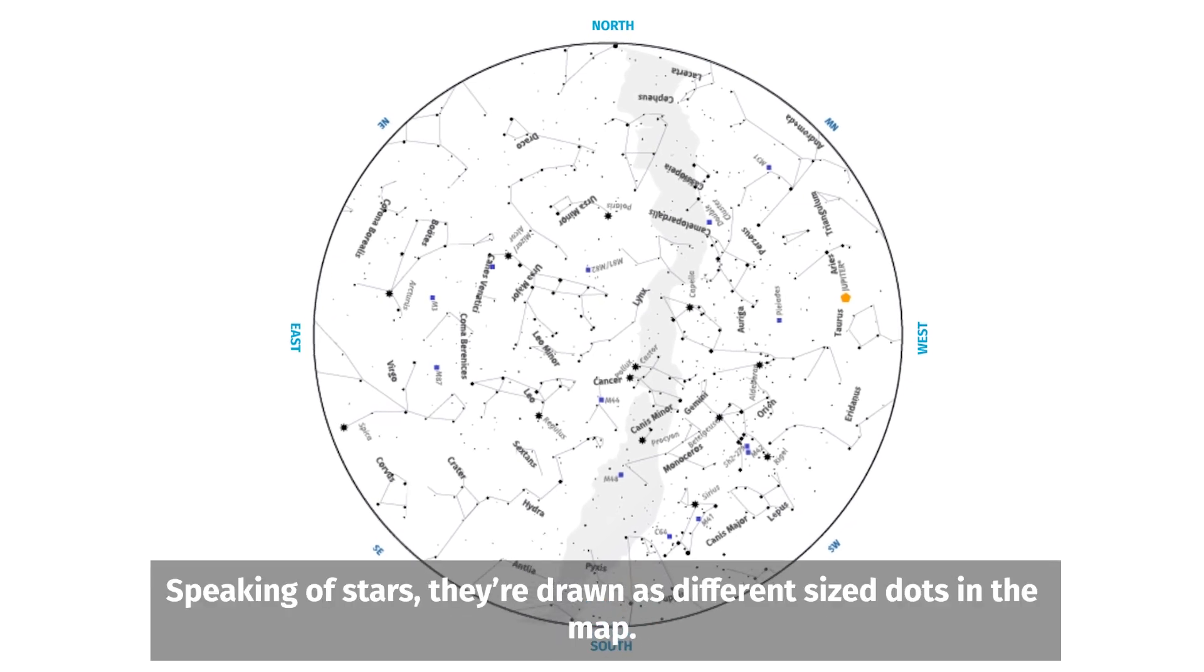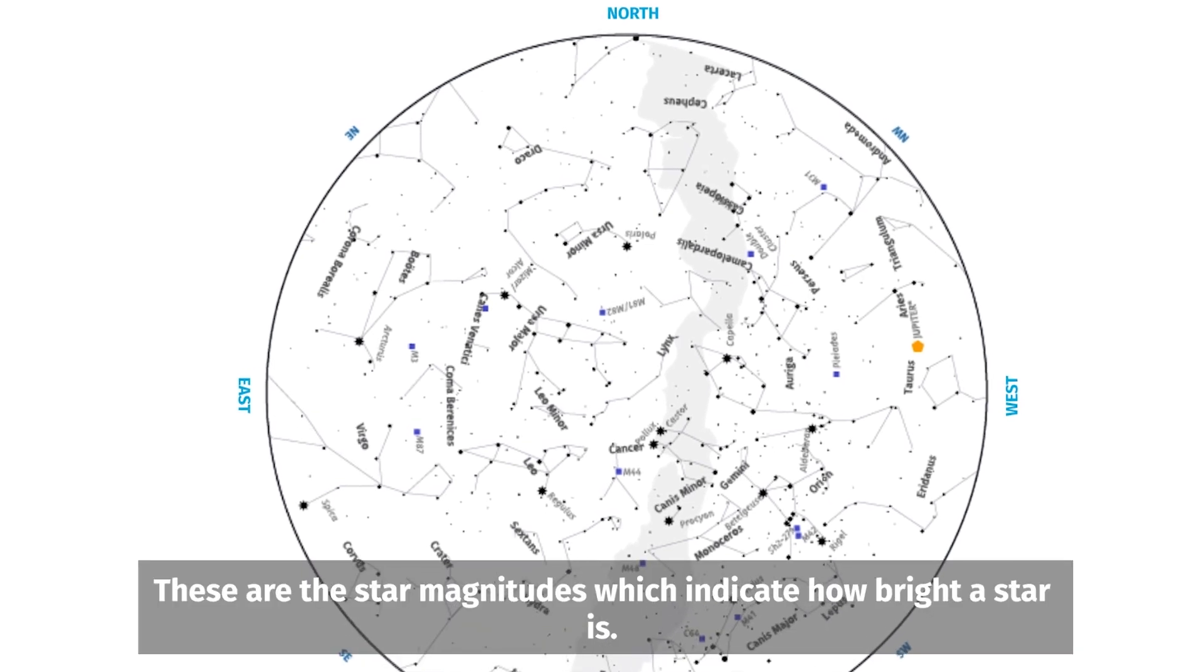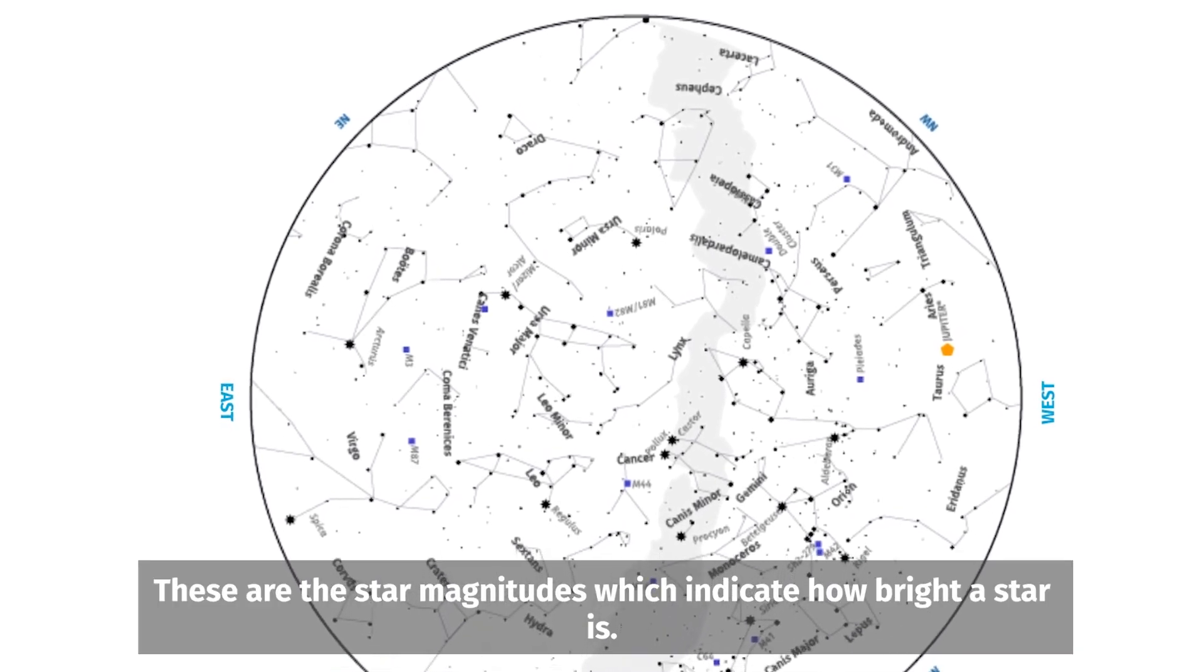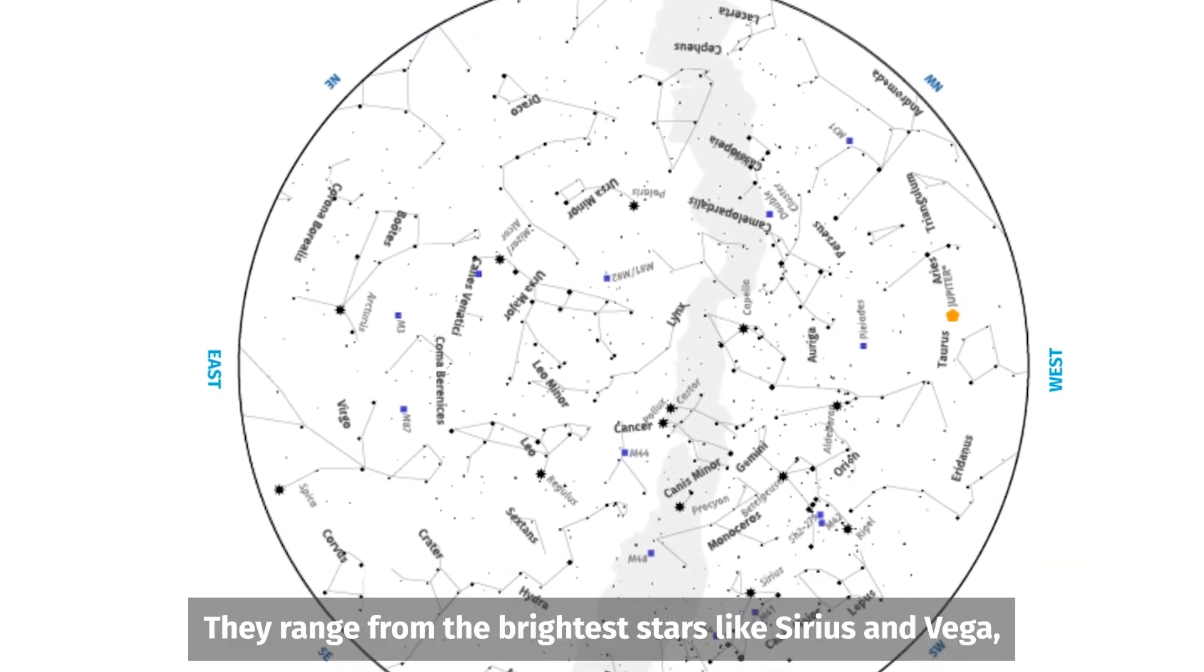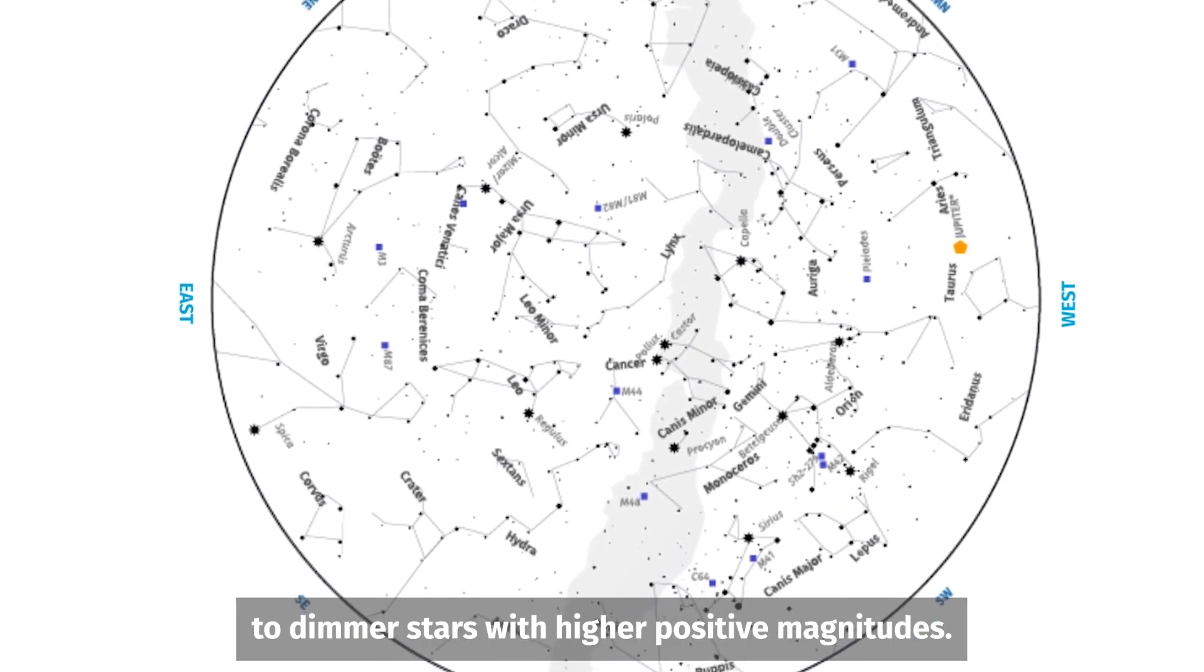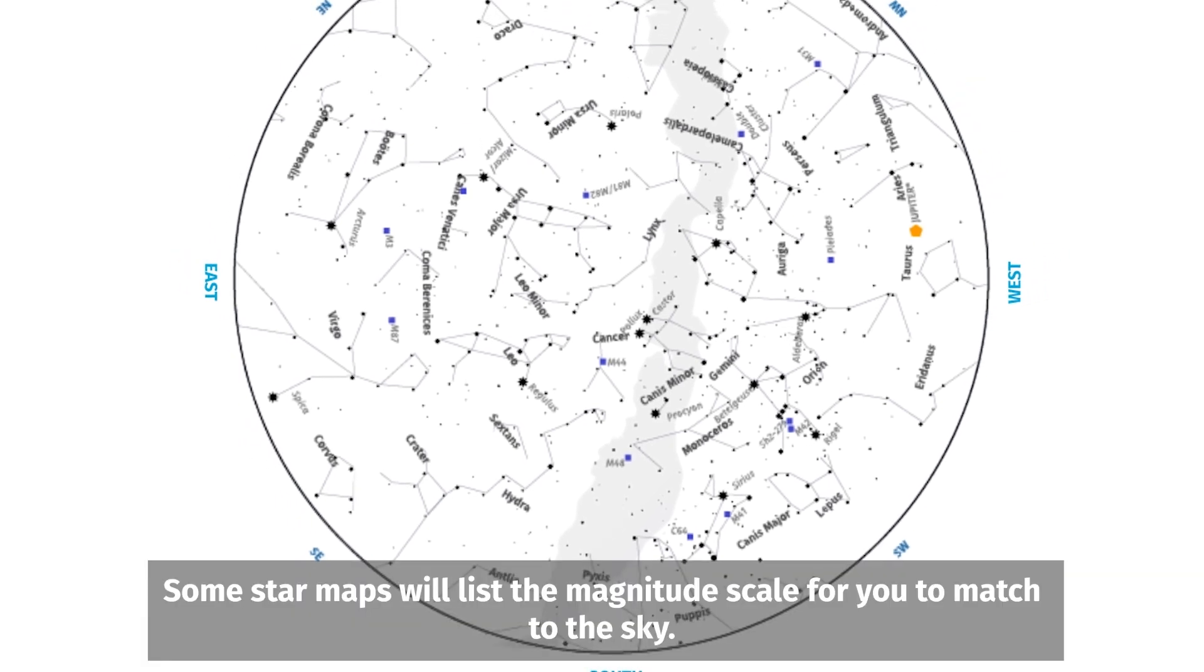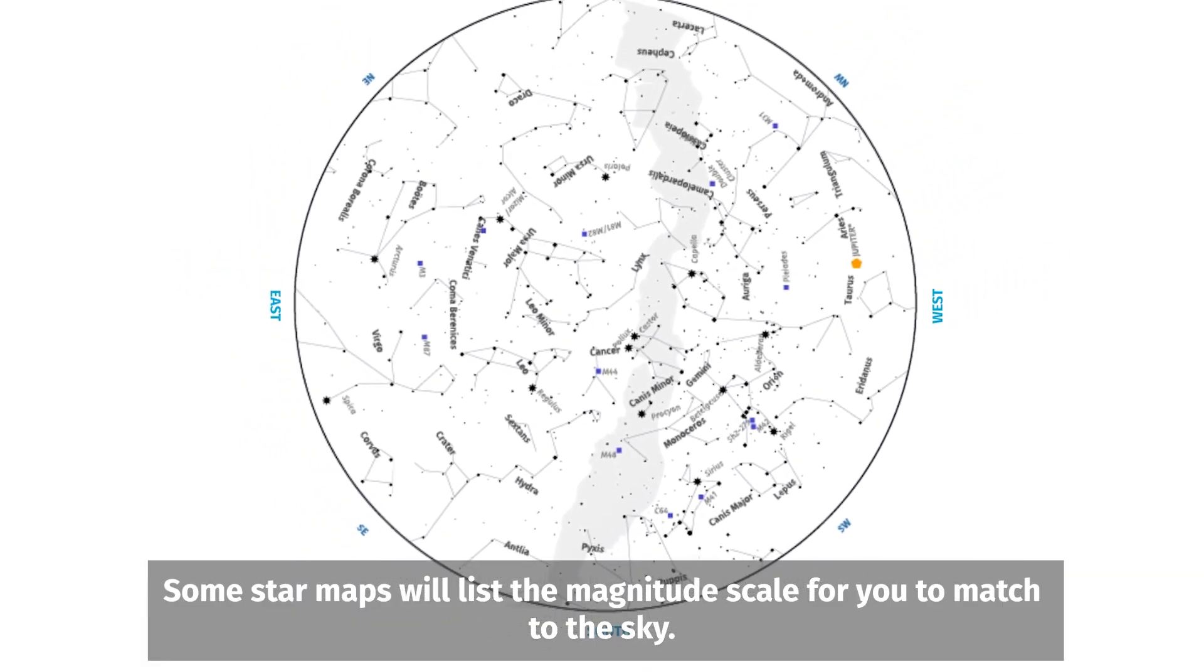Speaking of stars, they're drawn as different sized dots on the map. The larger the dot, the brighter the star. These are the star magnitudes which indicate how bright a star is. They range from the brightest stars like Sirius and Vega, which are negative and zero magnitudes respectively, to dimmer stars with higher positive magnitudes. Some star maps will list the magnitude scale for you to match to the sky.